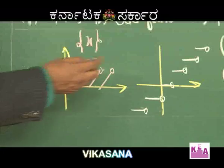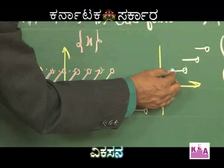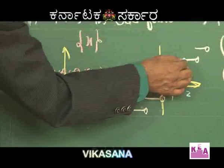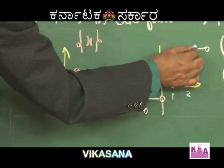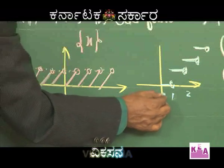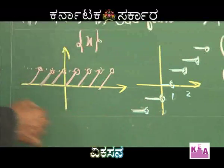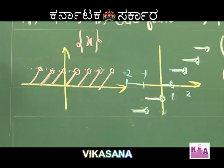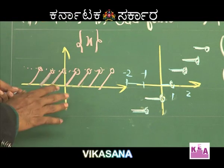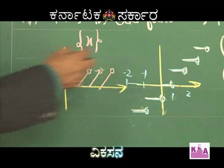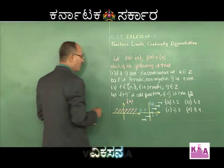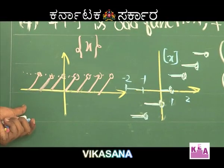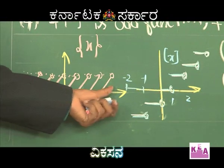To summarize both graphs: fractional part of x between 0 and 1 is 0, between 1 and 2 is 1, going negative for minus 1 to 0 as minus 1, and minus 2 to minus 1 as minus 2. If you observe carefully, the fractional part of x is clearly periodic, while the integral part of x is not periodic.